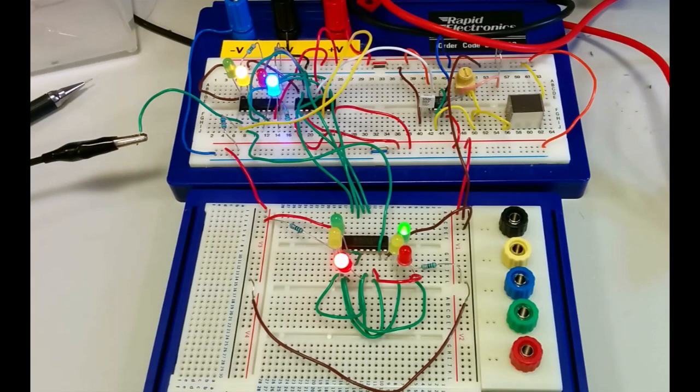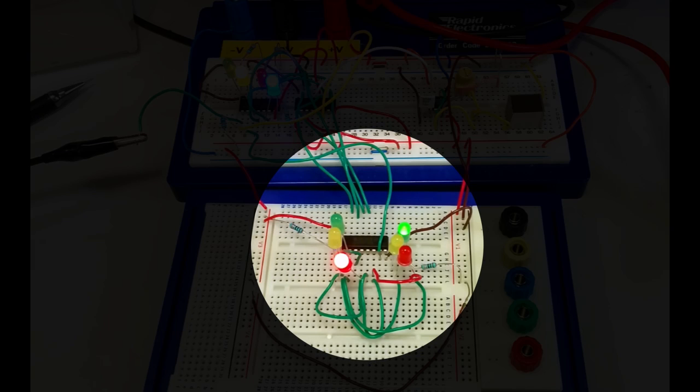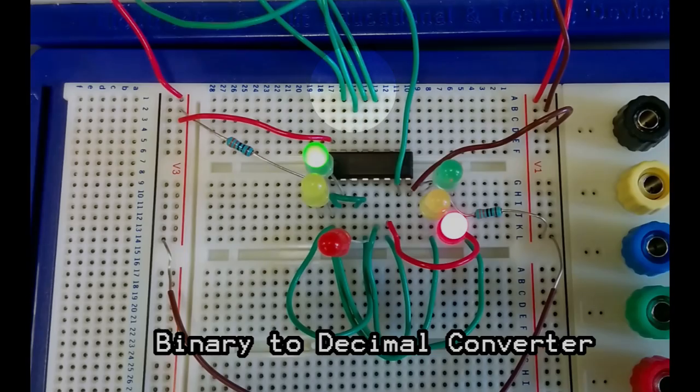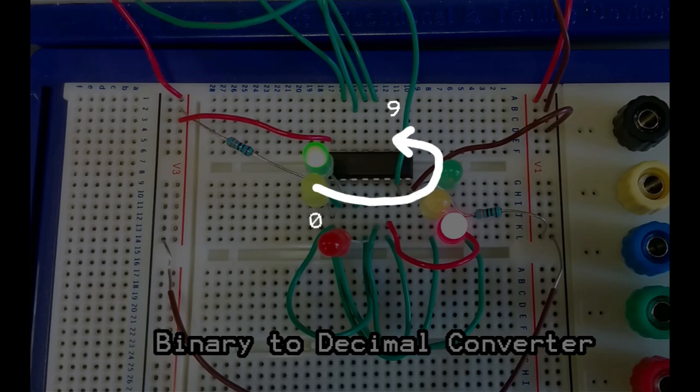To create the traffic lights we have to take this circuit and add one more chip to it. This new chip is what is known as a binary to decimal converter. This converter takes the binary input and in sequence outputs each of its pins which represent the numbers 0 to 9.